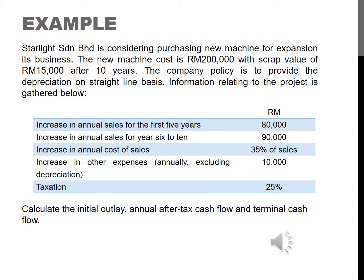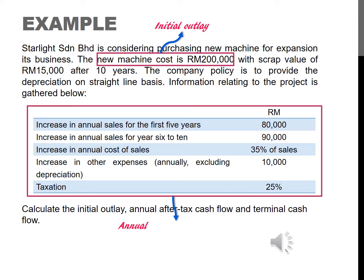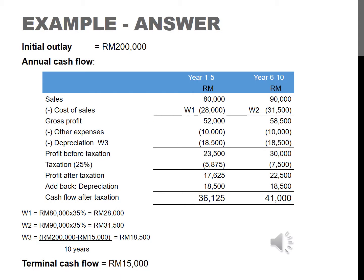I will highlight the important information — look carefully. Based on the highlighted information, this is the answer. The initial outlay is the cost of the machine: RM200,000. For the annual cash flow after taxation, we compute from sales: total revenue minus total expenses gives profit before taxation; then deduct taxation to get profit after taxation. Since we use cash flow and not accounting profit, we add back the non-cash item, which is depreciation, to get cash flow after taxation. Finally, the terminal cash flow is the scrap value of the non-current asset: RM15,000.